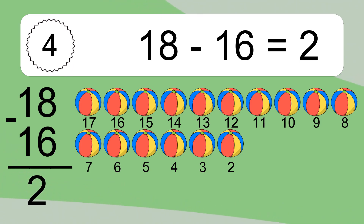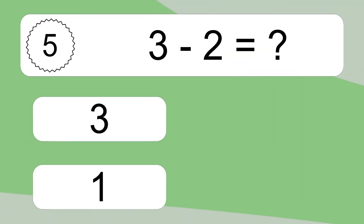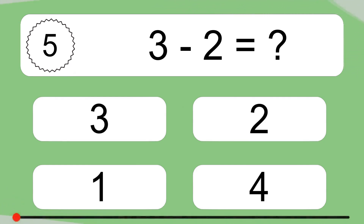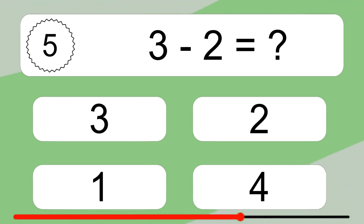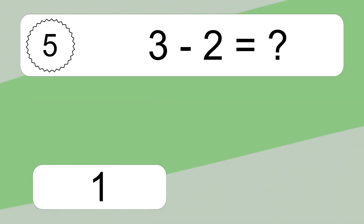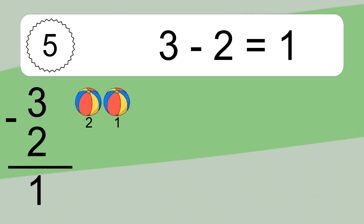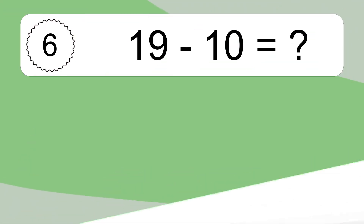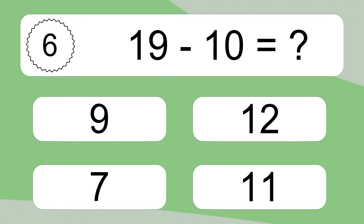3 minus 2 equals what? 3 minus 2 equals 1. Let's count it: 2, 1. 19 minus 10 equals what?